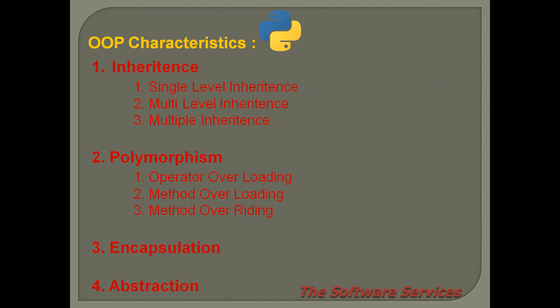Object-oriented programming has some characteristics: inheritance, polymorphism, encapsulation, and abstraction.